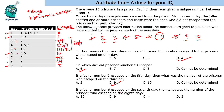Fourth question: if prisoner number 6 escaped on the 7th day, then what was the number of the prisoner who escaped on the 8th day? Days 7 and 8 are among prisoners 4 and 6. So if prisoner 6 escaped on the 7th day, then prisoner 4 escaped on the 8th day. That's the solution to this set — it was an easy set requiring basic common sense, solvable within 5 to 6 minutes.